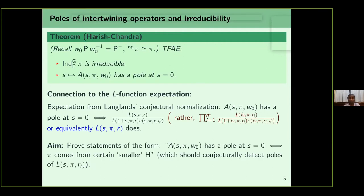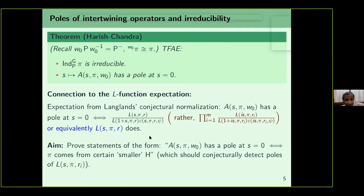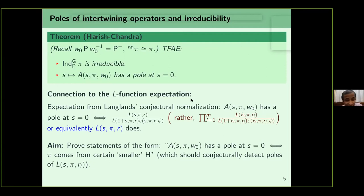The aim of the talk is to prove that the intertwining operator has a pole at s equals zero — corresponding to the induced representation being irreducible — if and only if π comes from certain smaller groups H, which should conjecturally detect the poles of these L-functions. Let me know if I'm speaking too fast.